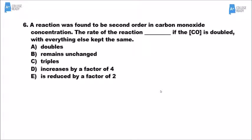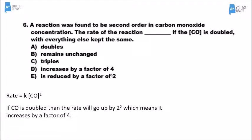Away from all the math — this is a conceptual problem you wouldn't need a calculator for. What does a rate law look like when something is second order? If I double the amount of carbon monoxide and it has an exponent of 2 because it's second order, then the overall rate would go up by a factor of 4, because increasing the amount of reactant makes the reaction go faster.